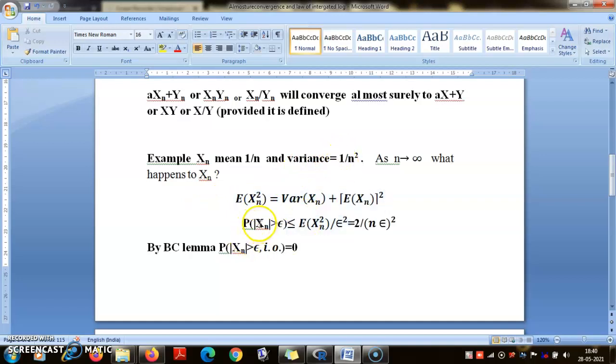Now by Chebyshev's inequality, P(|Xn| > ε) ≤ E[X²]/ε² = 2/(n²ε²). Is this sum convergent? Yes, because it is dominated by a sum multiple of 1/n². So by Borel-Cantelli lemma, P(|Xn| > ε infinitely often) = 0.